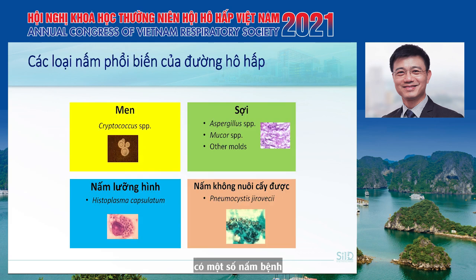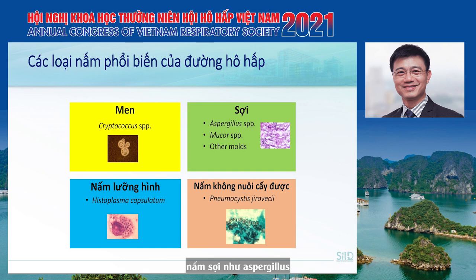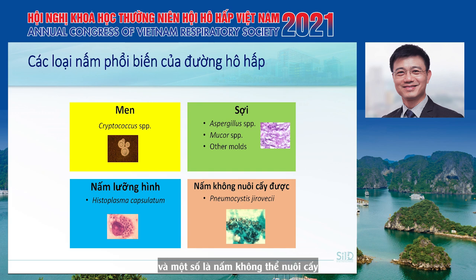There are several fungal pathogens that can cause respiratory tract infection, including yeasts such as Cryptococcus, molds such as Aspergillus and Mucor, dimorphic fungi such as Histoplasma, and some that are not able to be cultured.